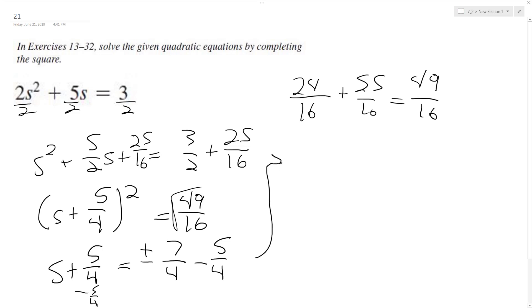So we end up with s is equal to negative 5 over 4 and negative 12, which is negative 3, because negative 12 over 4. And then positive 7 over 4 minus 5 over 4 is equal to 2 over 4, so we end up with 1 half.